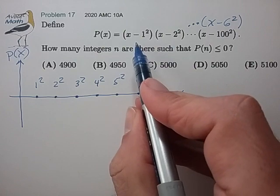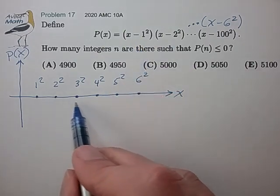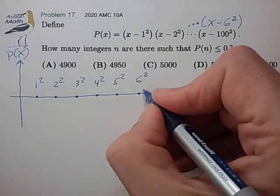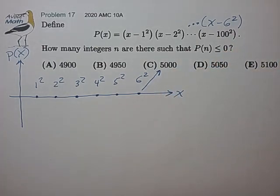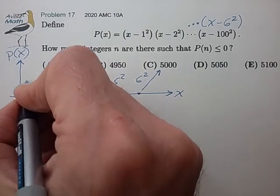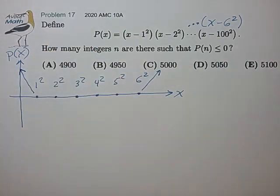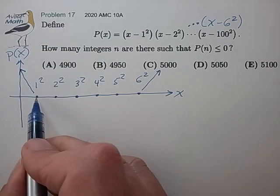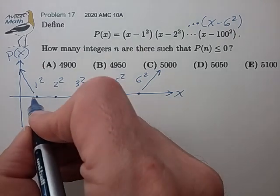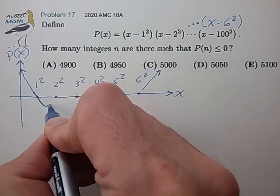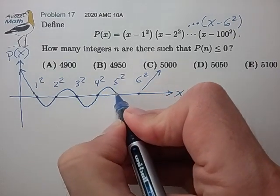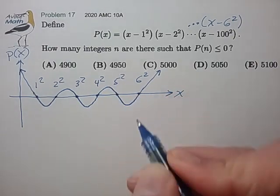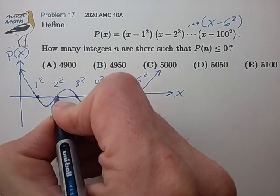So when x is above all the zeros, then the polynomial p of x is just kind of heading off to infinity. Below all the zeros, p of x is heading off to infinity. And between the zeros, what happens is that this polynomial has to weave in and out of the zeros to be consistent with that property.